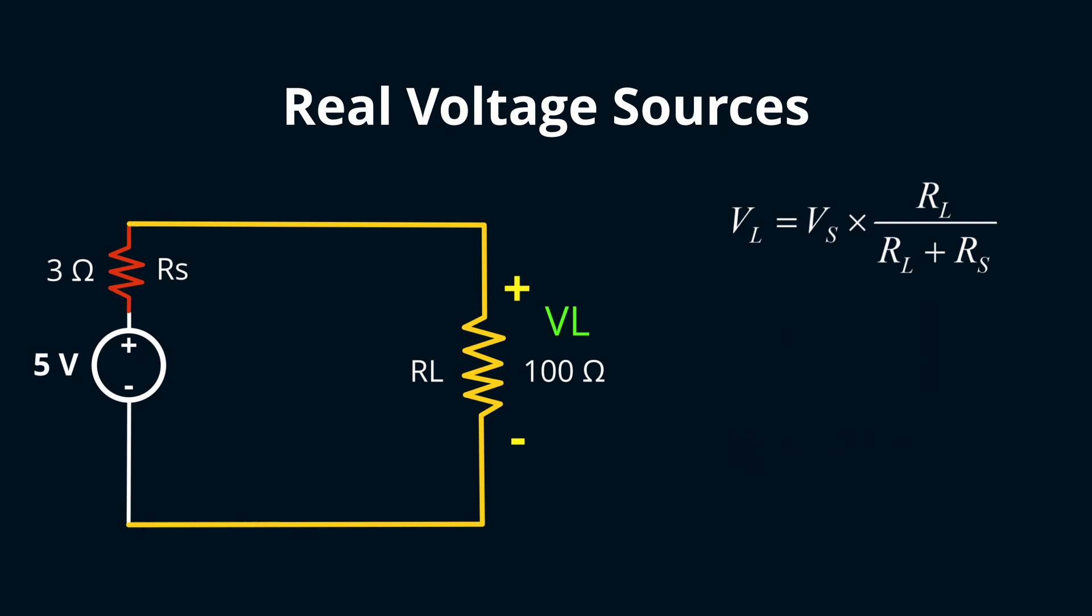But let's shrink our load resistance to 10 ohms and recalculate. Now, the load voltage plummets to roughly 3.85 volts, a marked departure from our target.